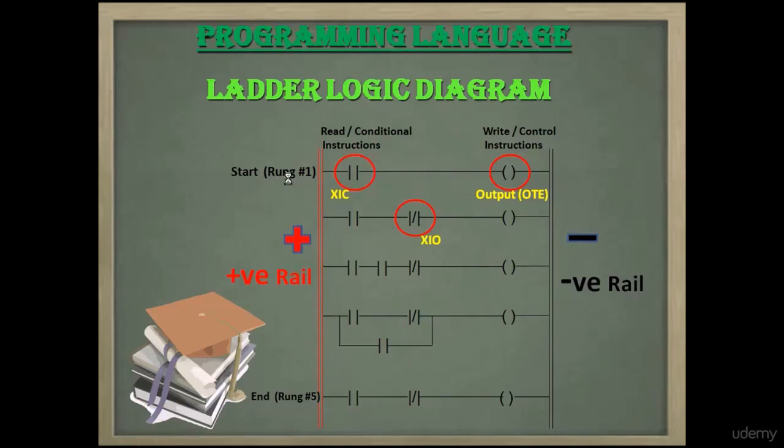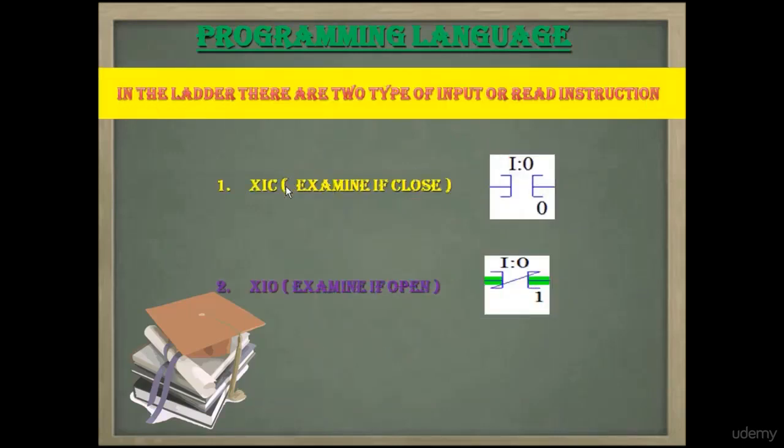In the ladder, there are two types of input or read instructions. First is XIC, examine if close. Second is XIO, examine if open.